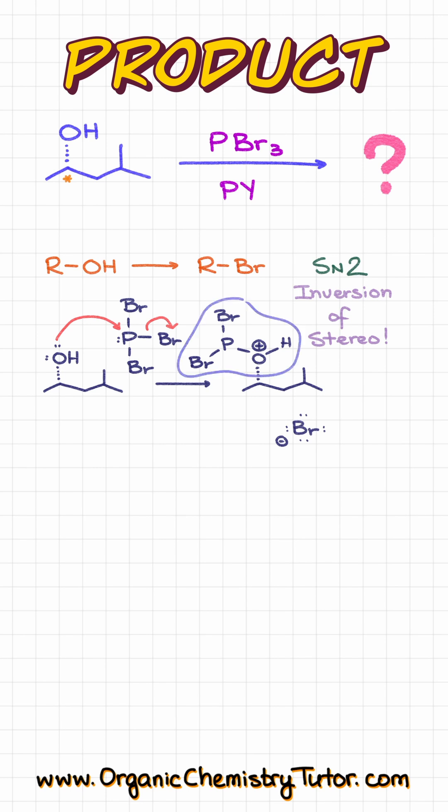Now, this entire group over here is an excellent leaving group, which means that our bromide that is floating around can come in and kick it out, giving us the following final product, where now, in our chiral carbon, the bromine is looking at us.